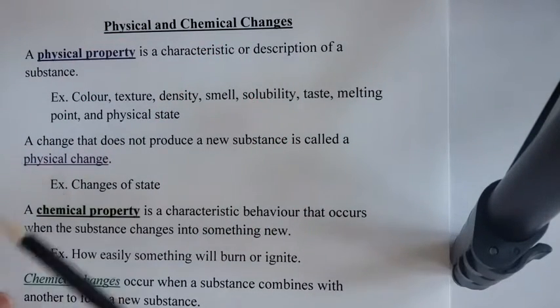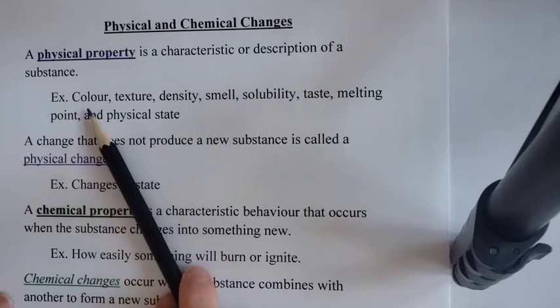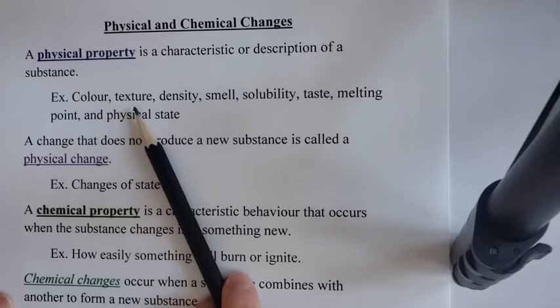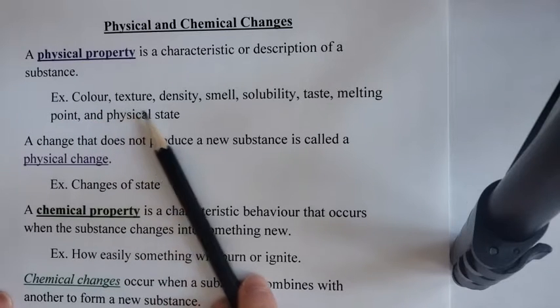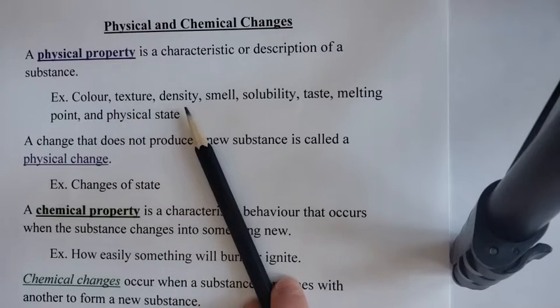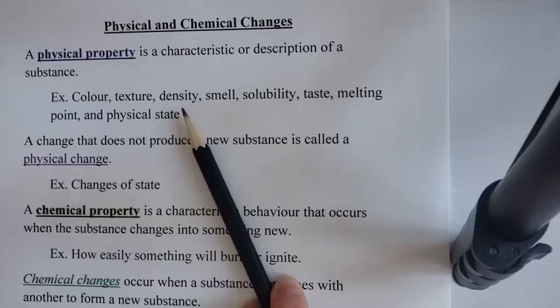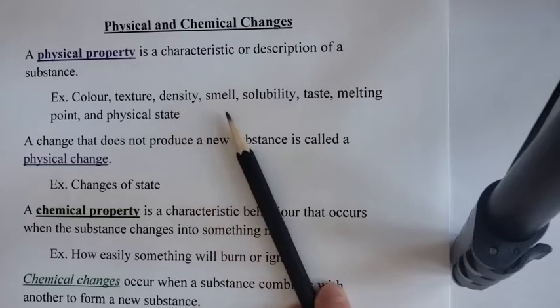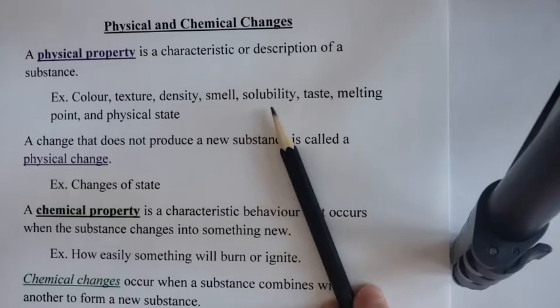We could talk about an object's color, its texture — that's how it feels, whether it's smooth, rough, or slippery. The density: to get the density is pretty easy, you just need the mass and the volume and you can calculate it. How it smells. And solubility.